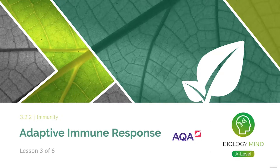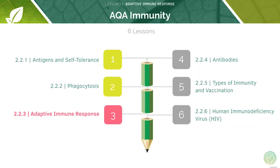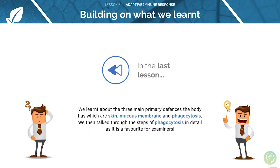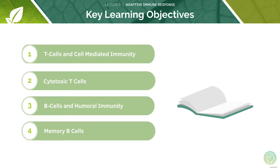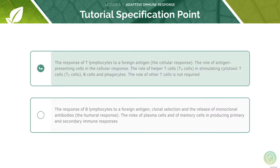Let's get started. Welcome to lesson three of six in this tutorial covering the adaptive immune response. In the last lesson we were looking at the three main primary defences in the body and the steps of phagocytosis. Here are the key learning objectives for today's lesson: first, we'll be looking at T cells and cell-mediated immunity, then at cytotoxic T cells, then B cells and humoral immunity, and finally memory B cells. Here are the AQA specification points for today's lesson — feel free to pause and read through them before we begin.